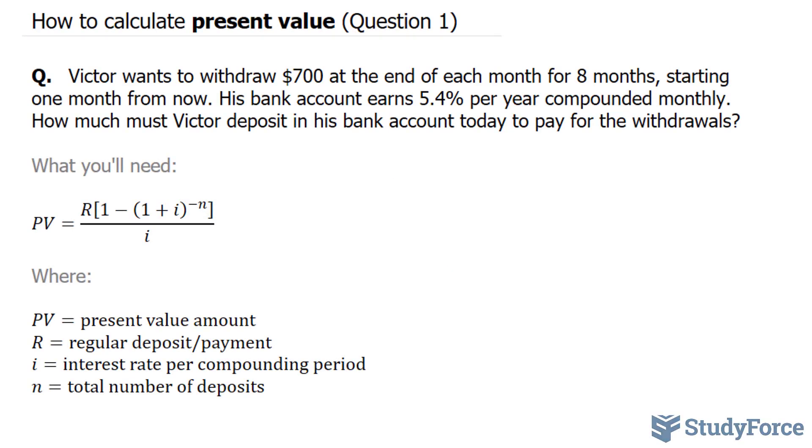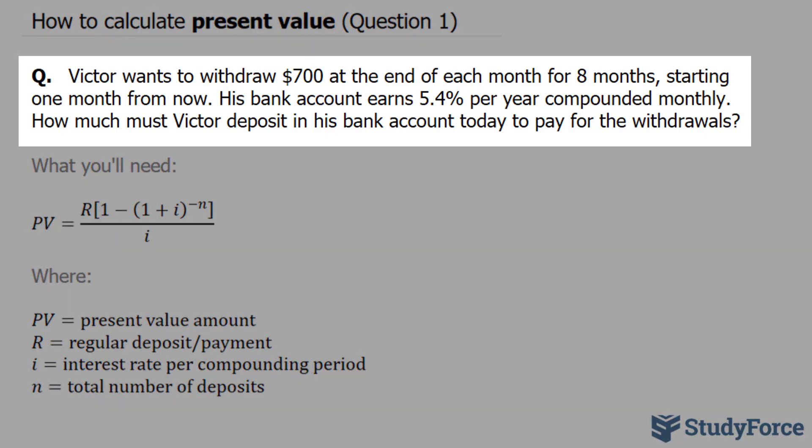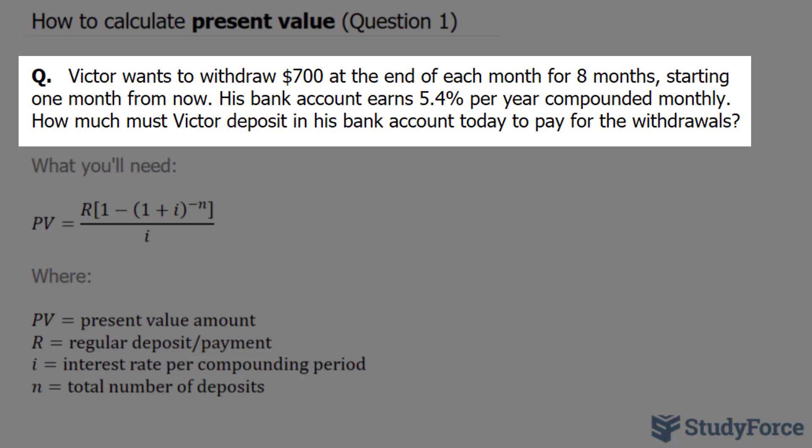In this demonstration, I'll show you how to calculate present value. The question asks, Victor wants to withdraw $700 at the end of each month for eight months, starting one month from now.